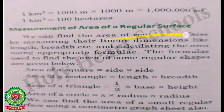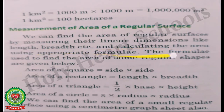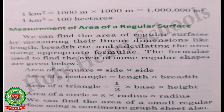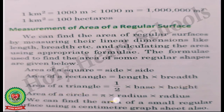Measurement of area of a regular surface: we can find the area of regular surfaces by measuring their linear dimensions like length, breadth, etc., and calculating the area using appropriate formulae. The formulae for some regular shapes are: area of a square = side × side; area of a rectangle = length × breadth; area of a triangle = ½ × base × height; and area of a circle = pi r squared, or pi × radius × radius.